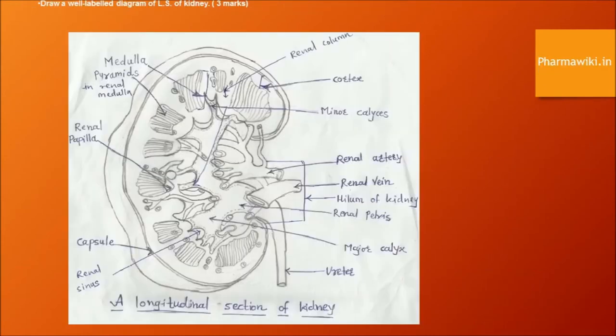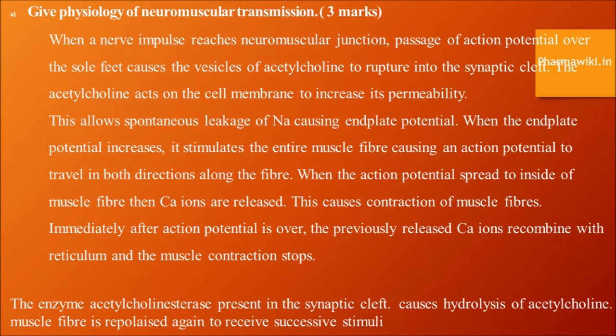The physiology of neuromuscular transmission. When a nerve impulse reaches the neuromuscular junction, passage of an action potential over the motor end plate causes vesicles of acetylcholine to rupture into the synaptic cleft. The acetylcholine acts on the cell membrane to increase its permeability, allowing spontaneous leakage of sodium causing an end plate potential. When the end plate potential increases, it stimulates the entire muscle fiber, causing an action potential to travel in both directions along the fiber. When the action potential spreads to the inside of the muscle fiber, calcium ions are released, causing contraction of muscle fibers. Immediately after the action potential is over, the released calcium ions recombine with the reticulum and muscle contraction stops.